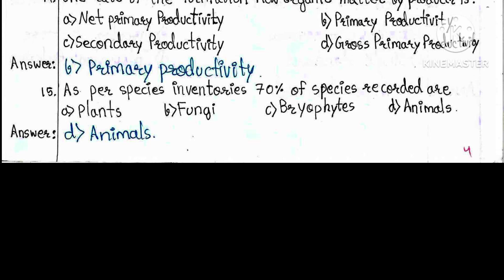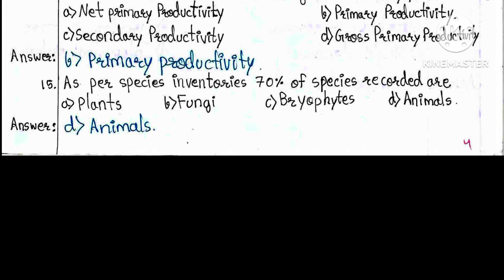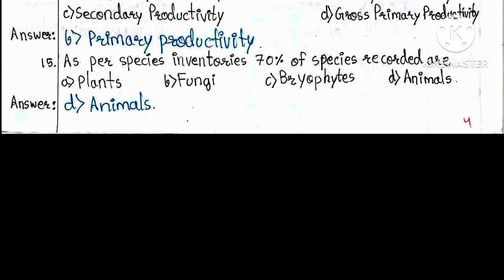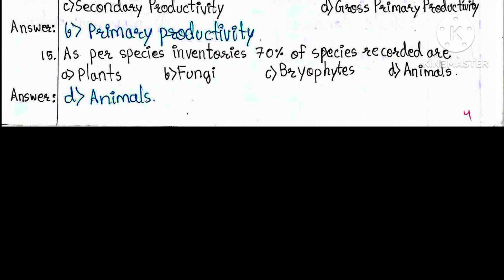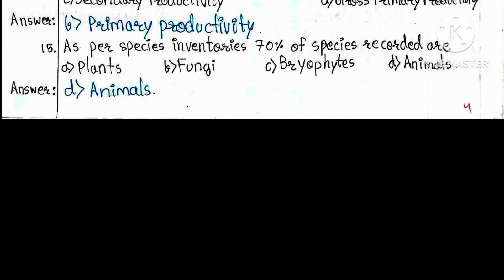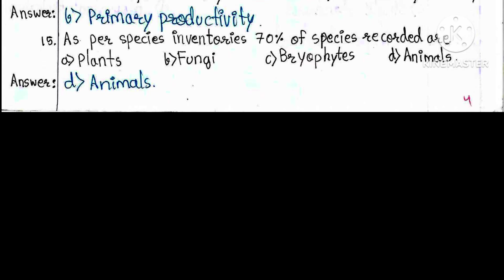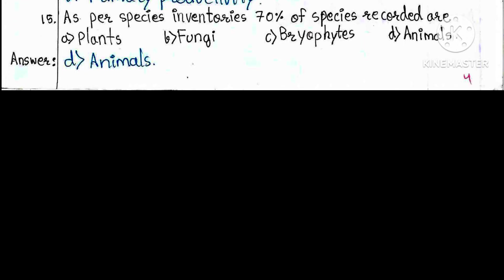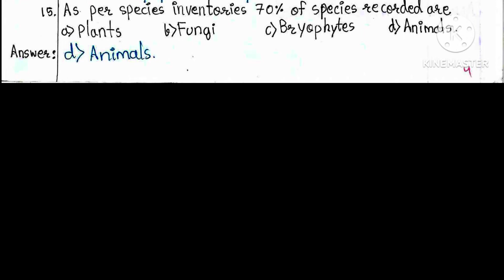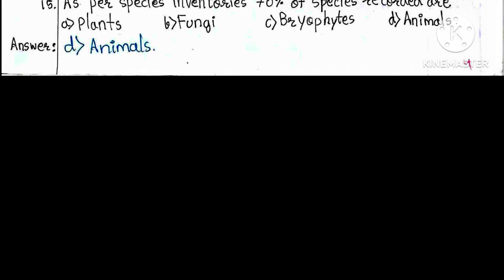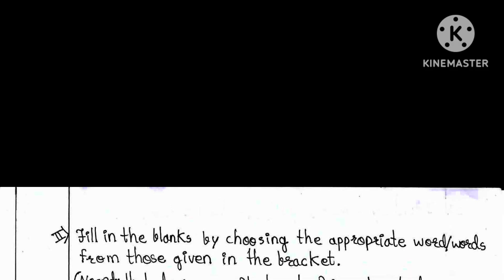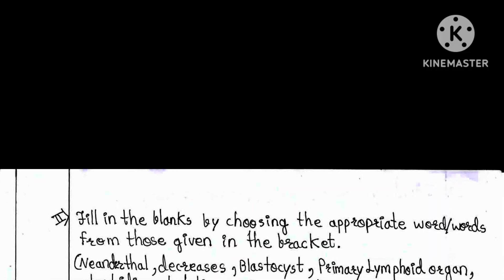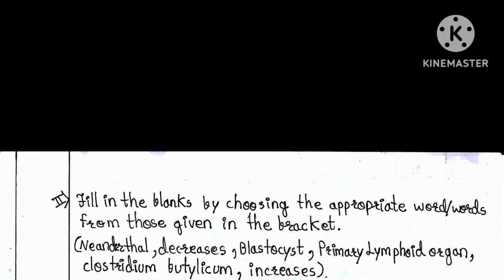Question 15: As per species inventory, 70 percent of species recorded are: A) Plants, B) Fungi, C) Bryophytes, D) Animals. The answer is D — animals.